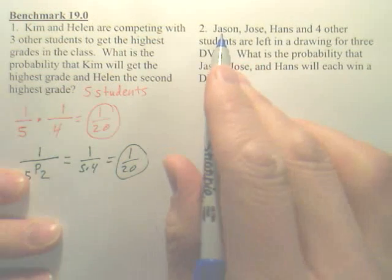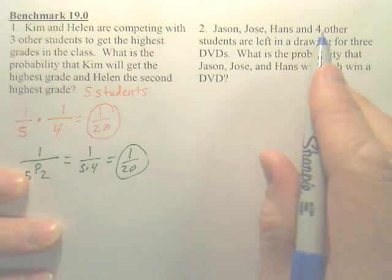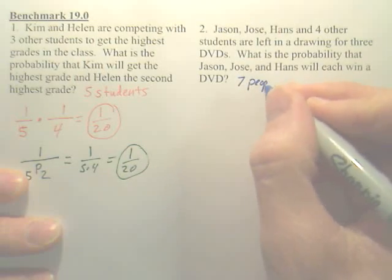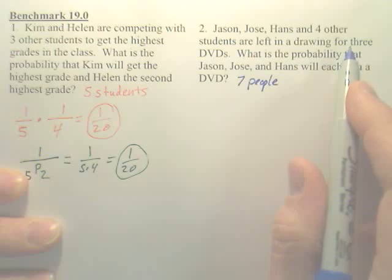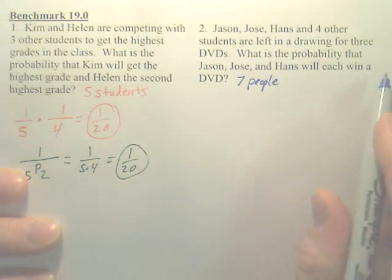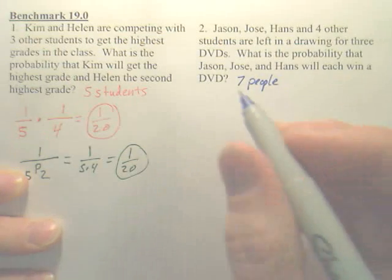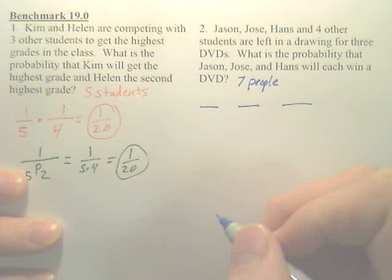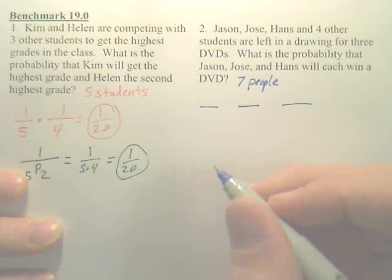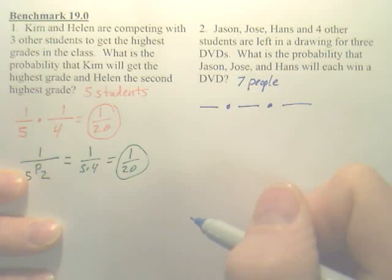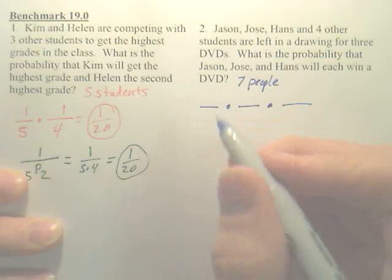Number two: Jason, Jose, Hans, and four others — seven people total — are left in a drawing for three DVDs. What is the probability that those three guys will each win a DVD? So there are three events. Is it 'and' or 'or'? They're all ands.